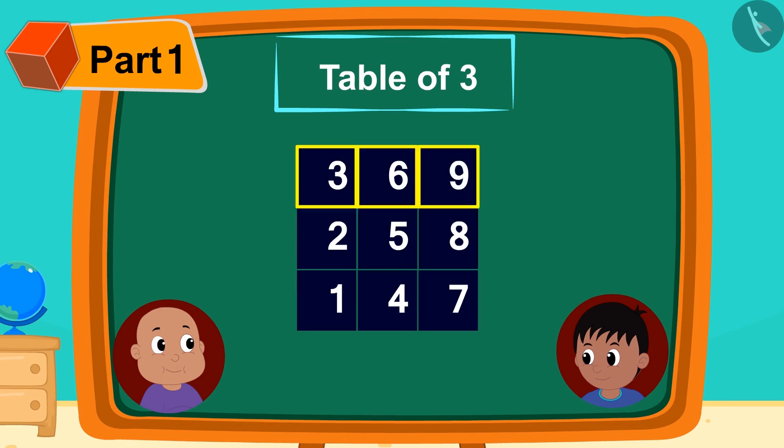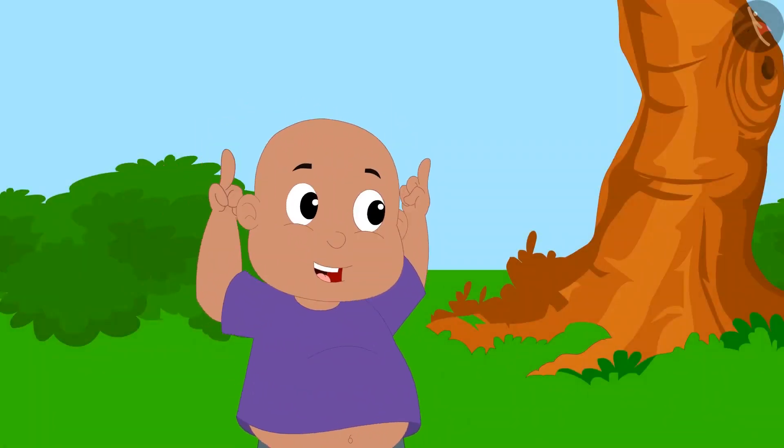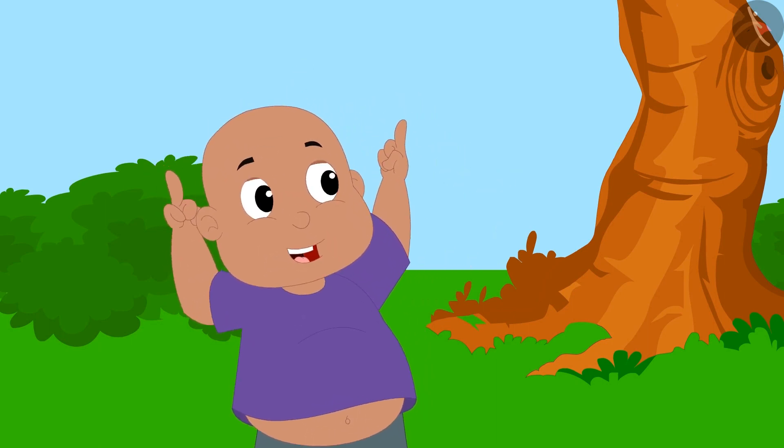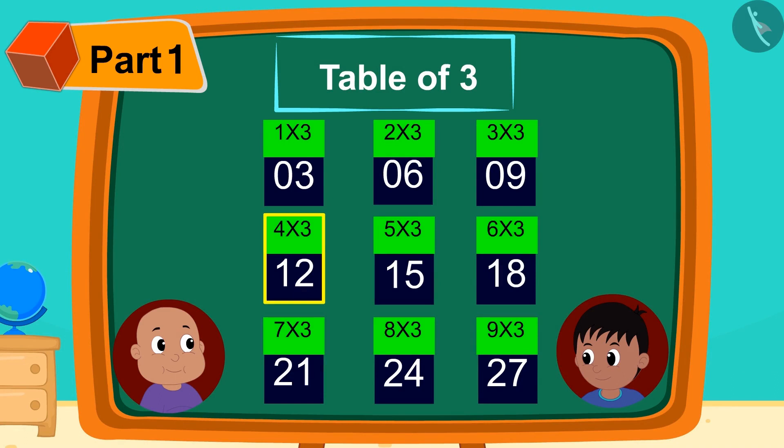Raju wrote 0 in front of the digits in the first line, 1 written next to the second line digit, and 2 written next to the digits of the third line. Bablu started dancing happily. Do you know why? Because he could see the table of 3 here.